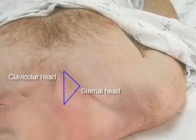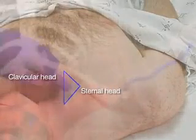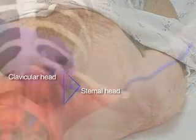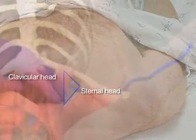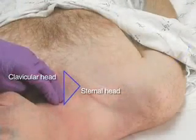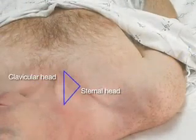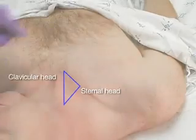The internal jugular vein can be found at the apex of the triangle formed by the sternal and clavicular heads of the sternocleidomastoid muscle, just lateral to the carotid artery.